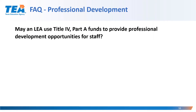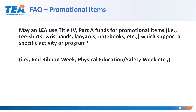May an LEA use Title IV Part A funds to provide professional development opportunities for staff? Yes, if the Title IV Part A comprehensive needs assessment and data support the specified professional development opportunities and it meets all allowable activities and use of funds requirements. However, an LEA with an allocation of at least $30,000 must provide activities in all three areas. Regarding promotional items — for example, items for Red Ribbon Week, Physical Education Week, or Safety Week — the response is no. These types of items fit into the category of advertising and public relations, which are not allowable for the federal program.